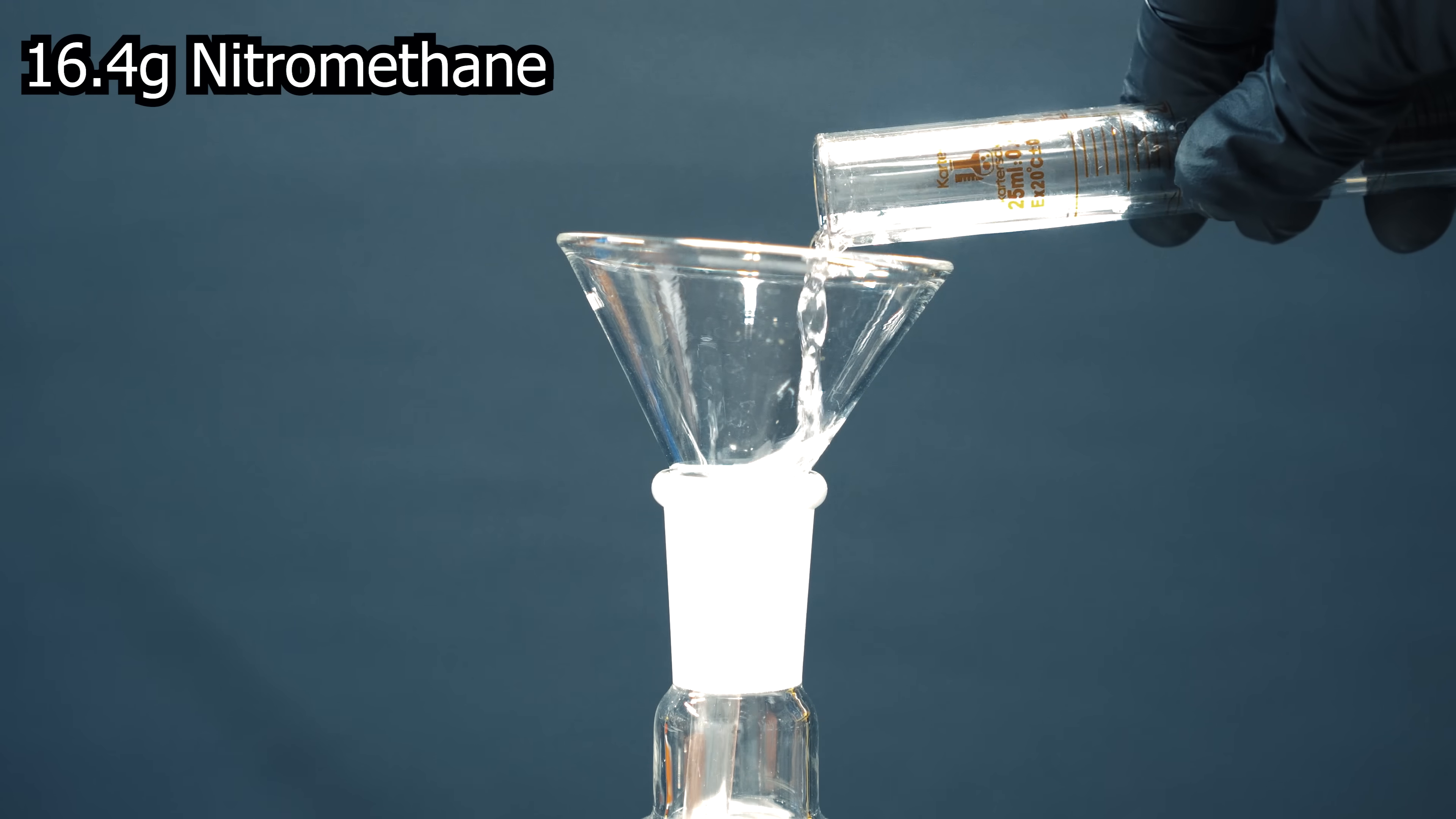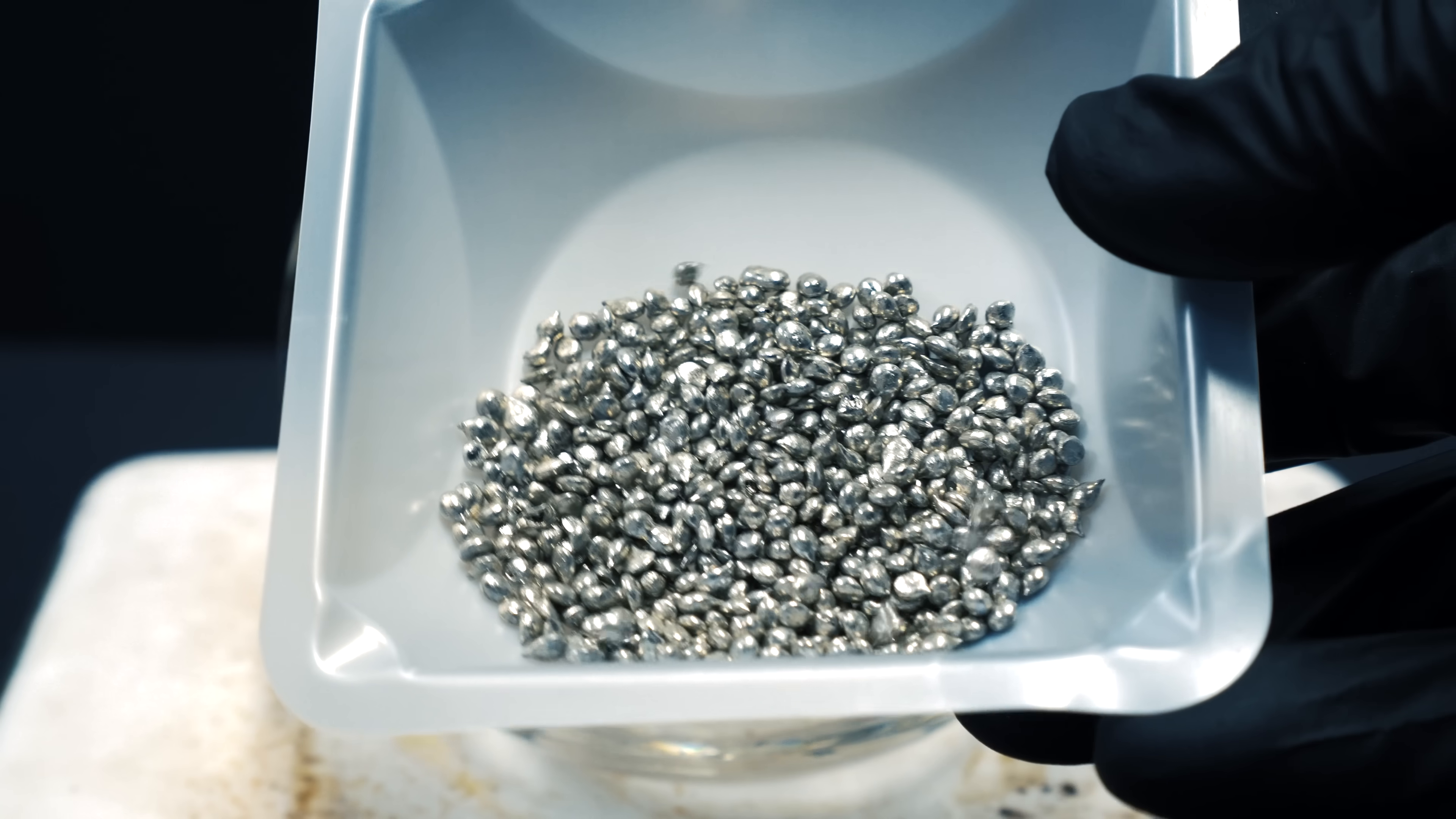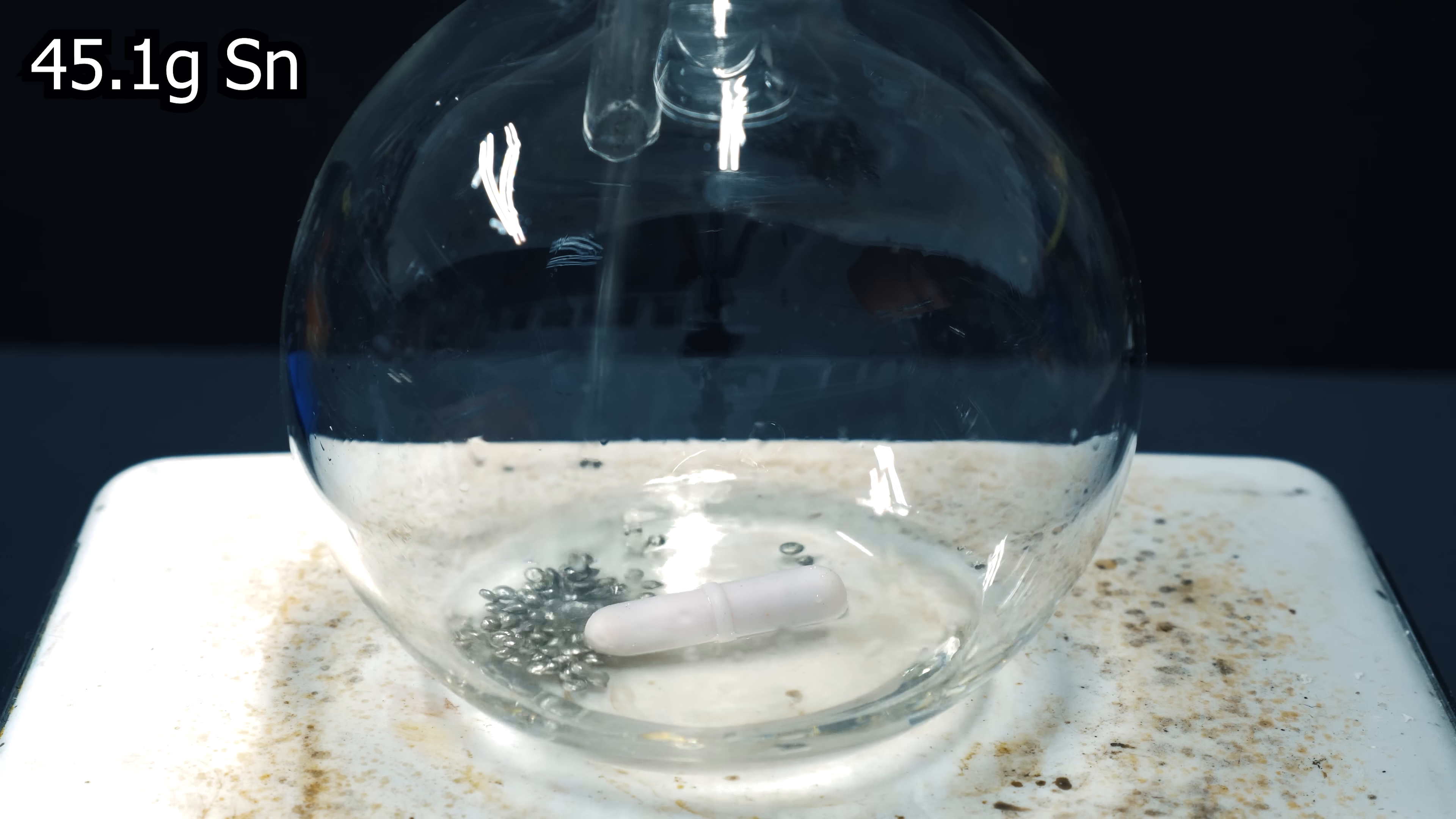I added 16.4g of nitromethane that I made from my previous video. Like I said before, we're going to be using tin as our metal source. The reason I went with tin is this procedure only calls for about an hour of refluxing, whereas the iron would take about 14 hours.